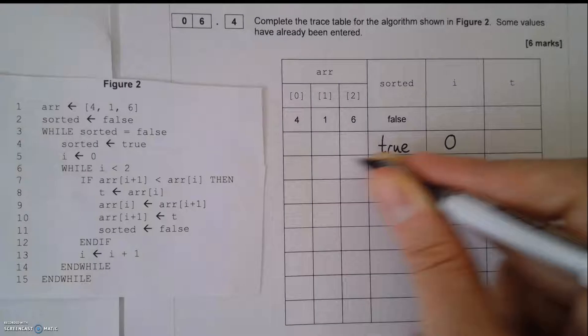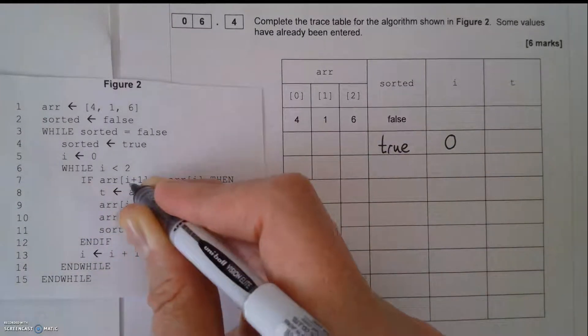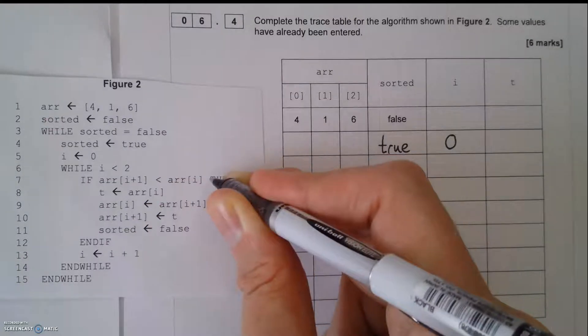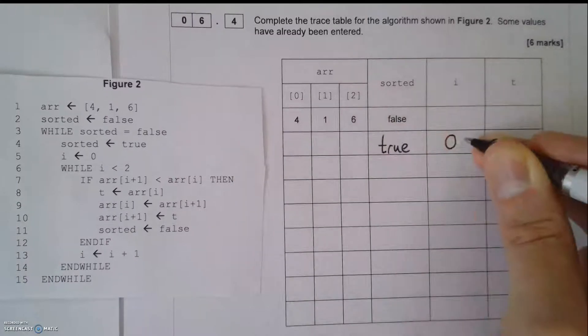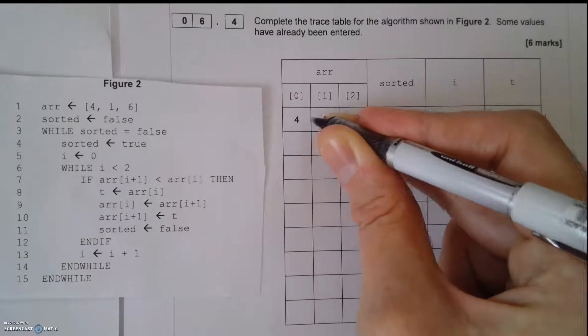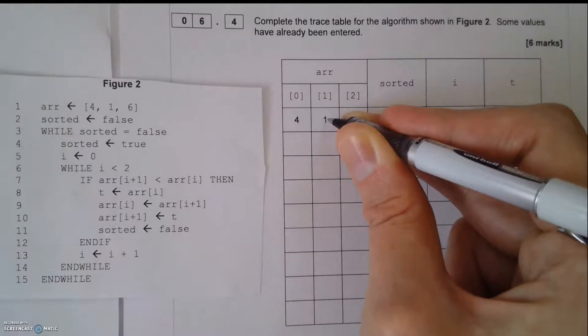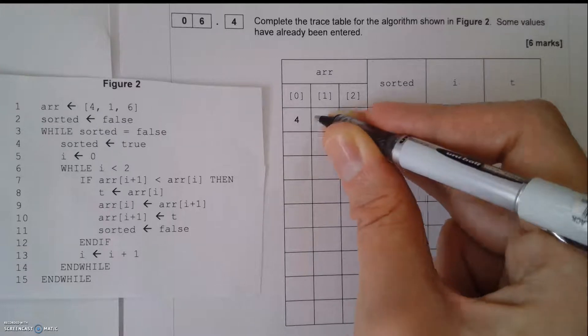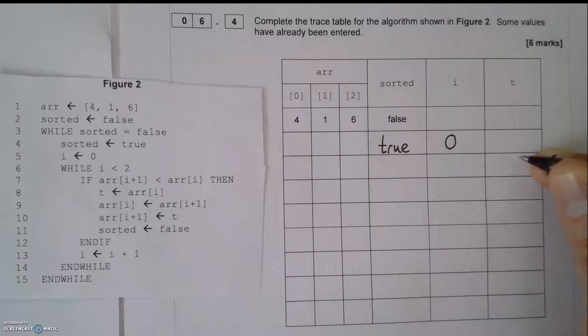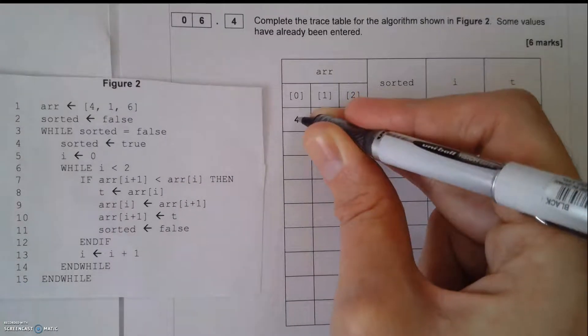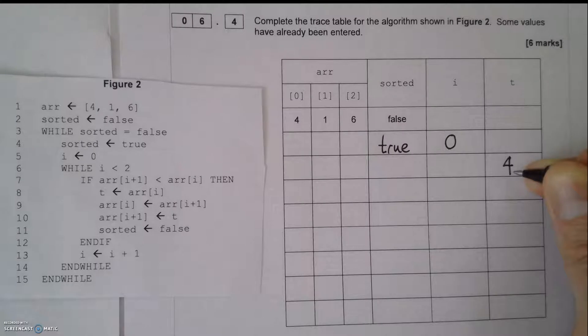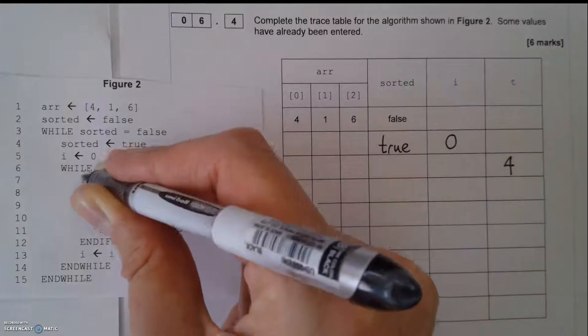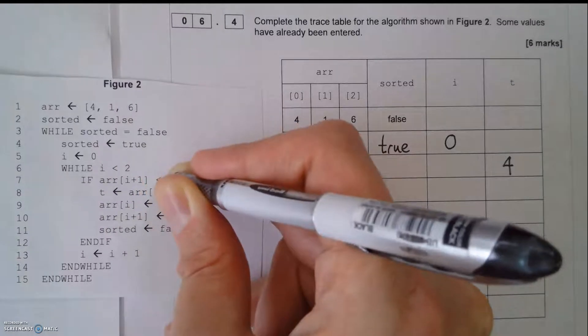i is less than 2 - yes, it is. 0 is less than 2. If array i plus 1 is less than array i, let's look at that condition. Array i plus 1 - i is 0, so i plus 1 will be 1. If array i plus 1 is less than array i, yes, 1 is definitely less than 4, then t equals array i. So array i contains 4, so t will now contain 4. And I'm going on to a new line here. What I recommend is if you get into an indentation there, that means that you need to start a new line on your trace table.